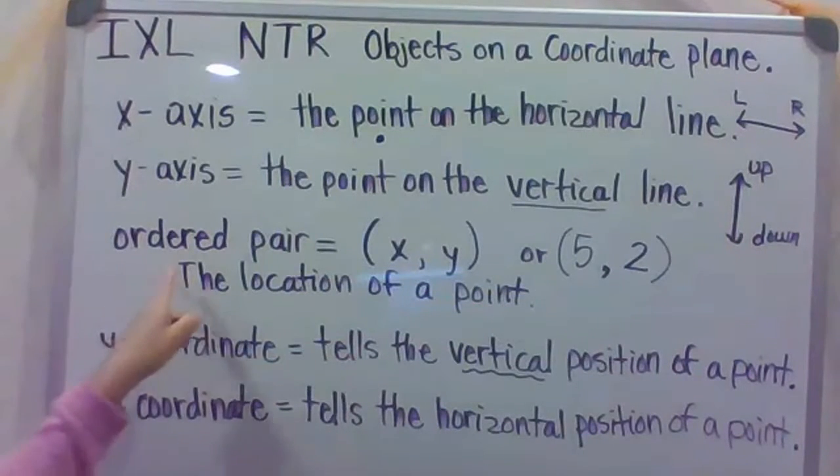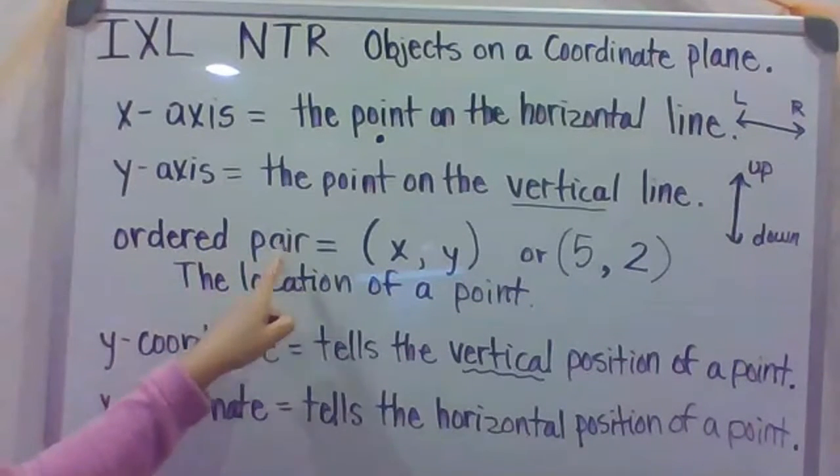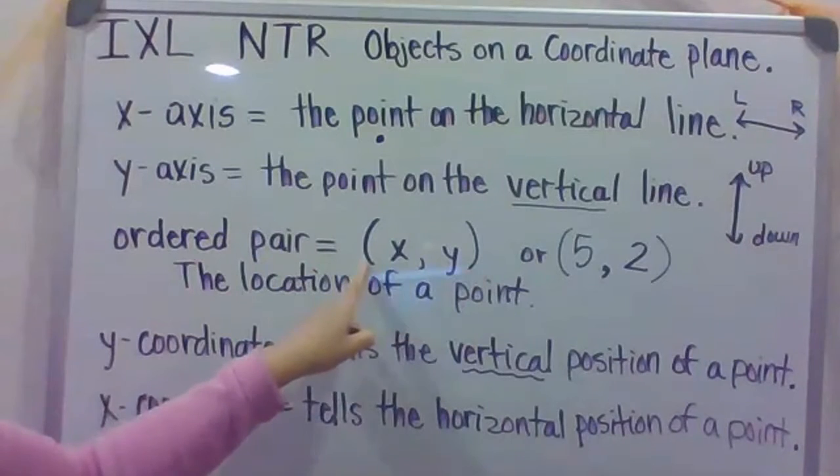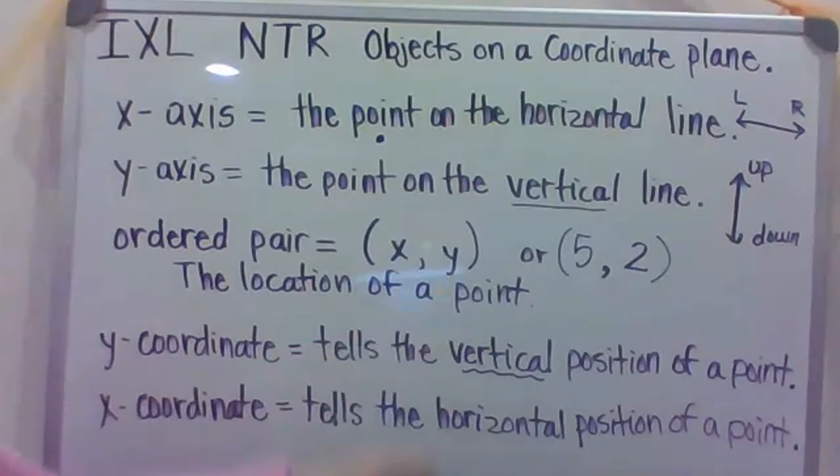You will also need to know what an ordered pair is. An ordered pair you will always find in parentheses, separated with a comma. The X will always be the first coordinate, and then the Y will come next. So just remember, think of an airplane.